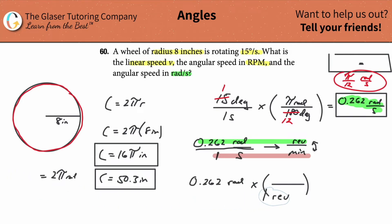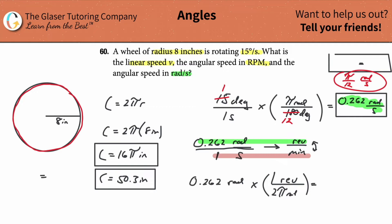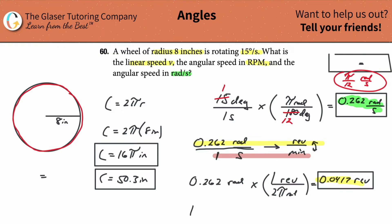Since we want radians to cancel, 2π goes in the denominator and 1 revolution goes in the numerator. Taking the exact value 0.261799... and dividing by 2π gives approximately 0.0417 revolutions. That's our intermediate value for the revolutions part of the conversion.